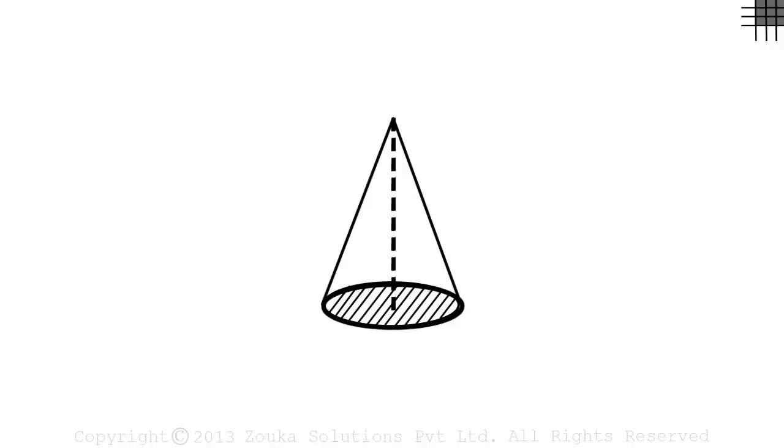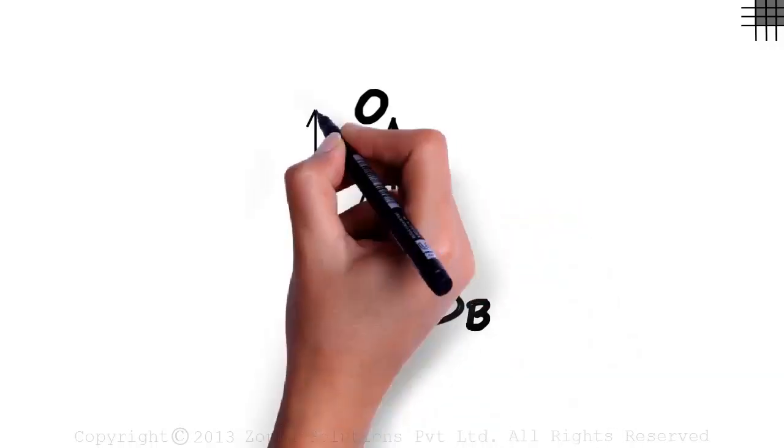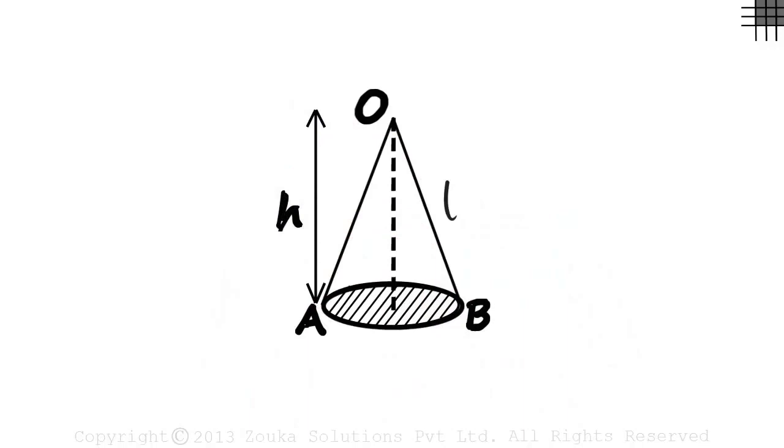Let us name the points O, A, B. Points A and B are marked on the circumference such that AB forms a diameter. Let L be the slant height and H be the perpendicular height and let R be the radius of the circular base.